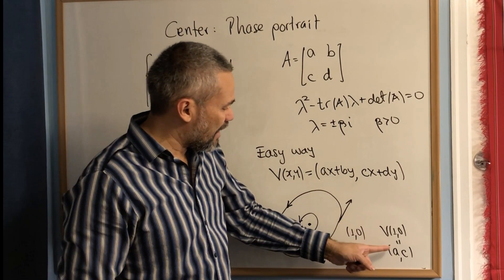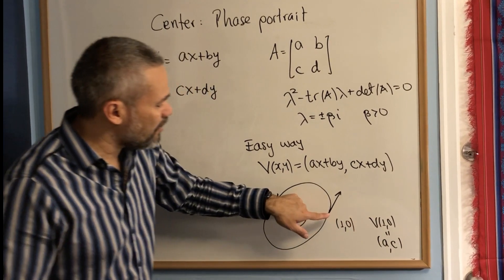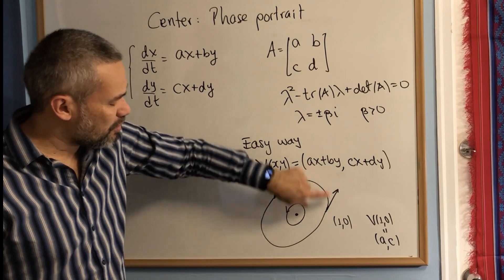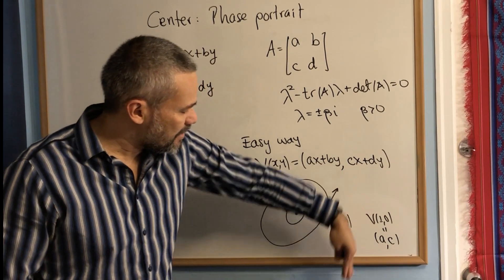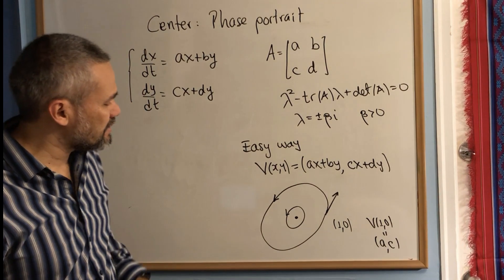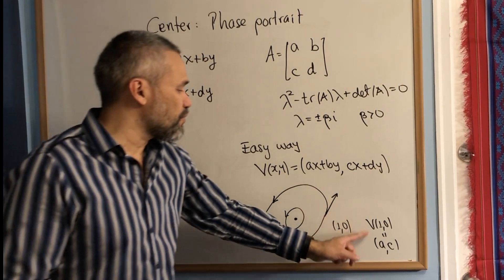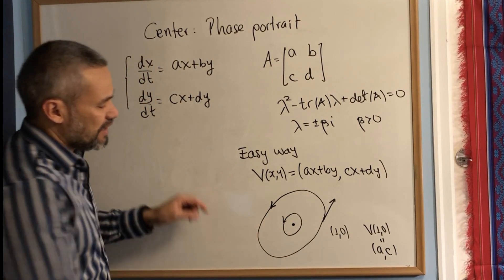Actually, with this in mind, you can see that if c is bigger than zero, then the orbit goes counterclockwise. And if c is smaller than zero, then the arrow goes down, that means you're going to go clockwise. But if you compute the whole vector, you get a better idea of how the orbits look like.